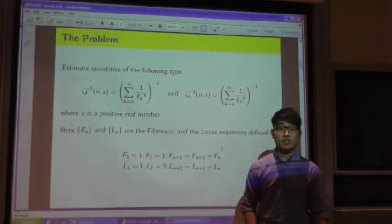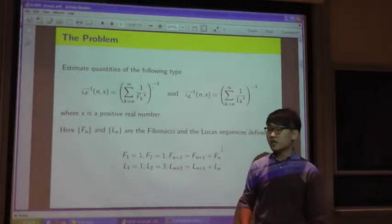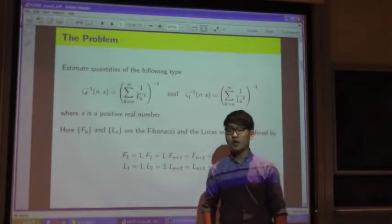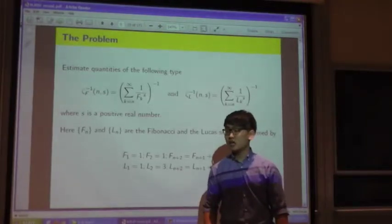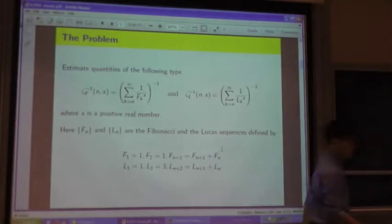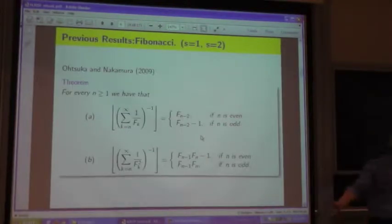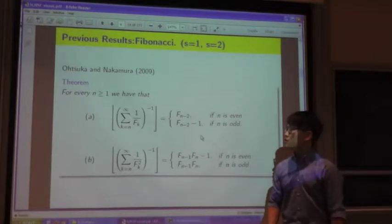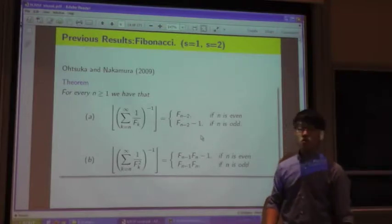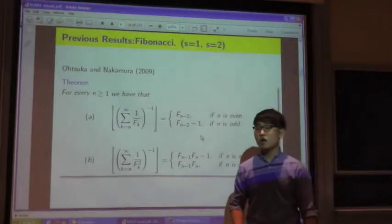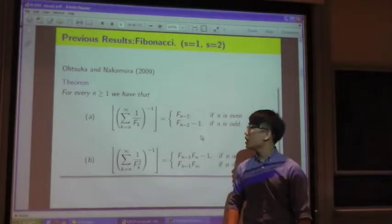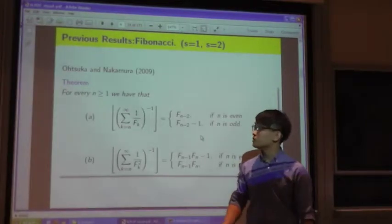What really triggered my motivation was the Fibonacci Quarterly, which I had begun to read quite often. One of the main findings I found was from Otsuka and Nakamura, two Japanese mathematicians who studied the following in 2009. At the time this research was done, Otsuka was actually a high school student under the mentorship of Professor Nakamura.